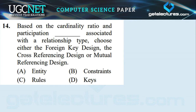Question number 14 is based on the cardinality ratio and participation associated with the relationship type — choose either the foreign key design, cross-referencing design, or mutual referencing design. The correct answer involves participation constraints, as participation constraints are used alongside cardinality ratios to design relationship types in ER modeling.